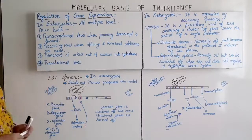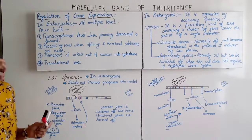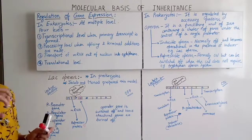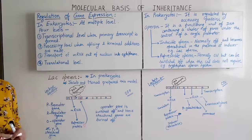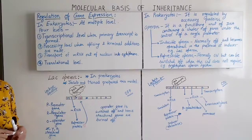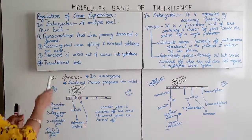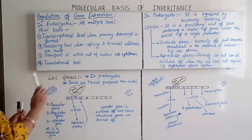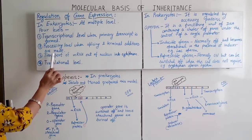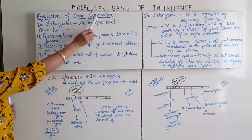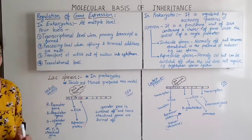The last level is the translational level — after reading the whole information from the messenger RNA with the help of transfer RNA, they form the protein polypeptide chain. These are the four levels where we can check gene expression in the case of eukaryotes.